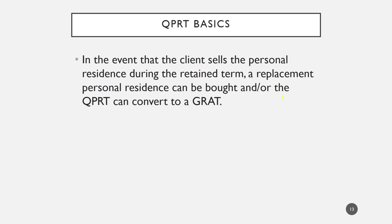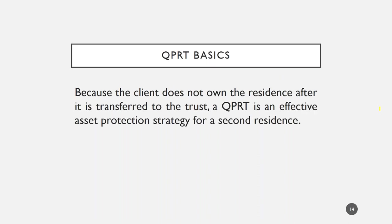If the personal residence is sold or destroyed during the retained term, it can be replaced with an alternate residence. A second option is that the proceeds from the sale, or insurance proceeds from destruction of the property, can be invested in a GRAT. Because the client doesn't own the residence after the transfer to the trust, it is also an effective asset protection strategy for second homes.